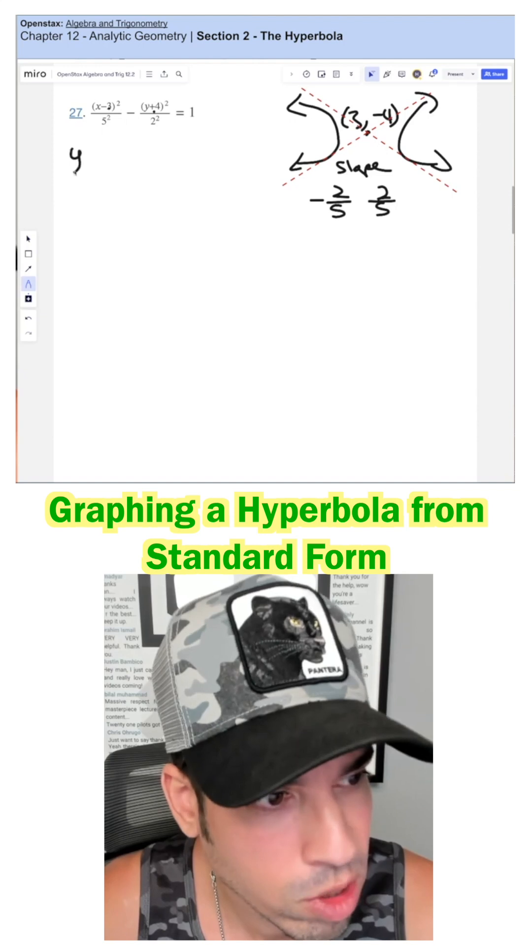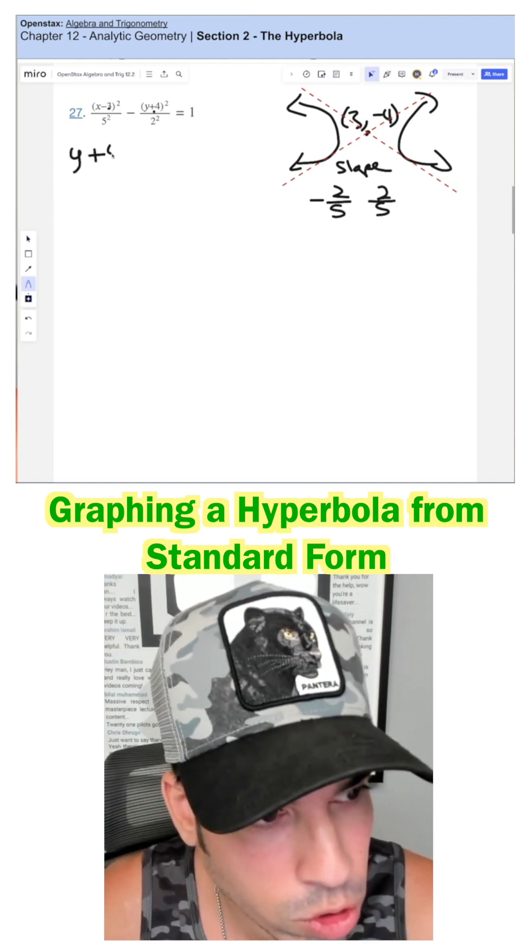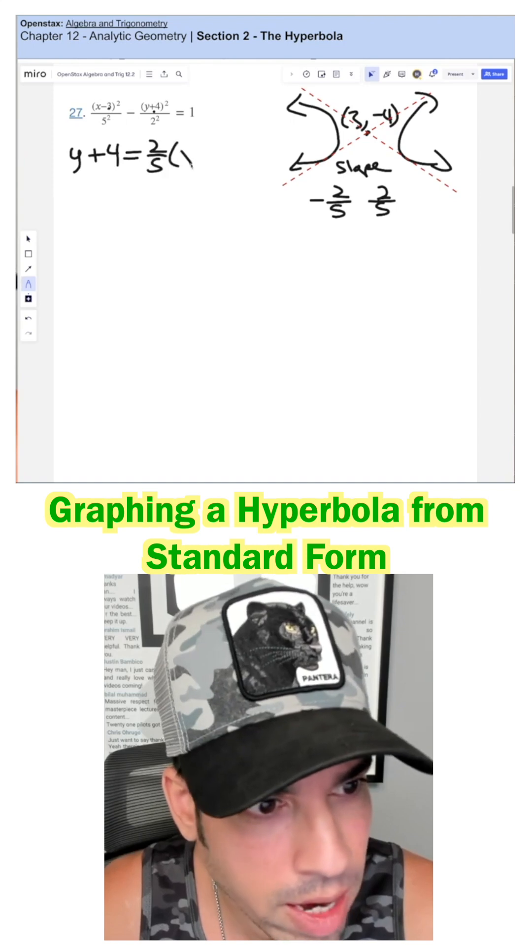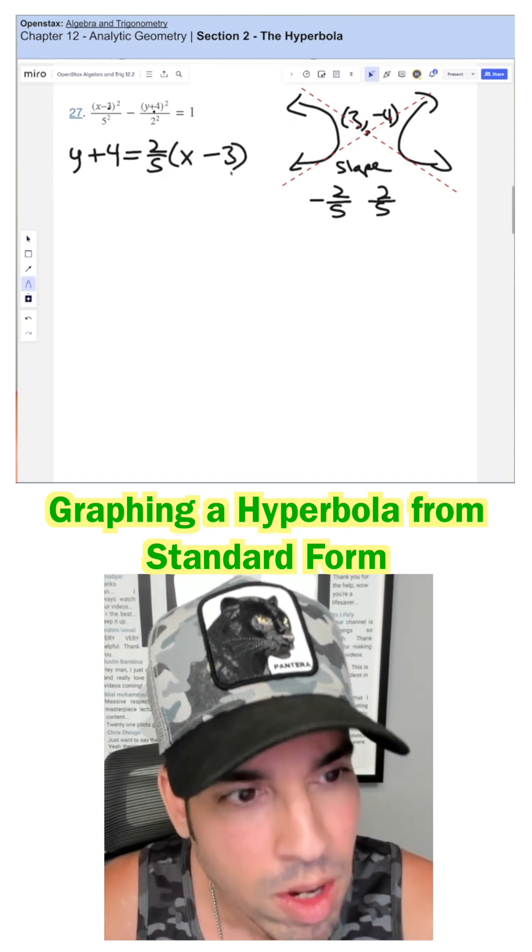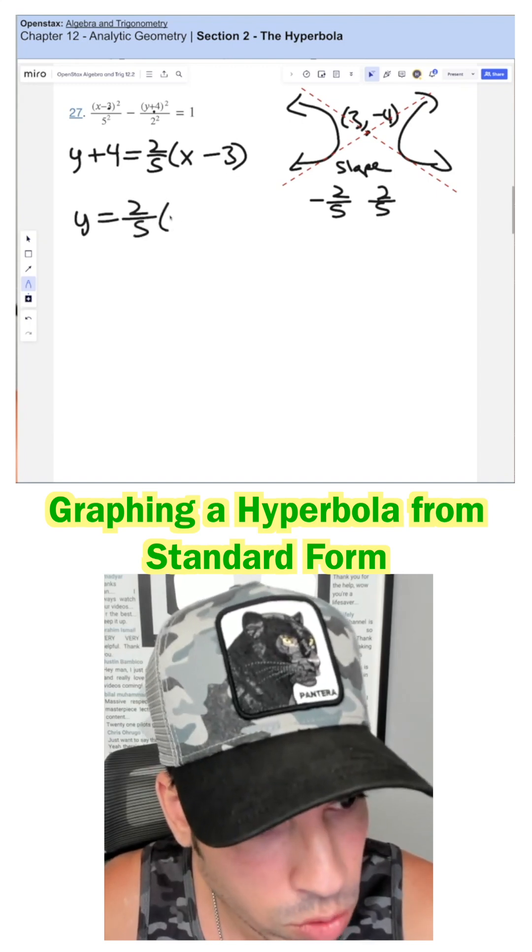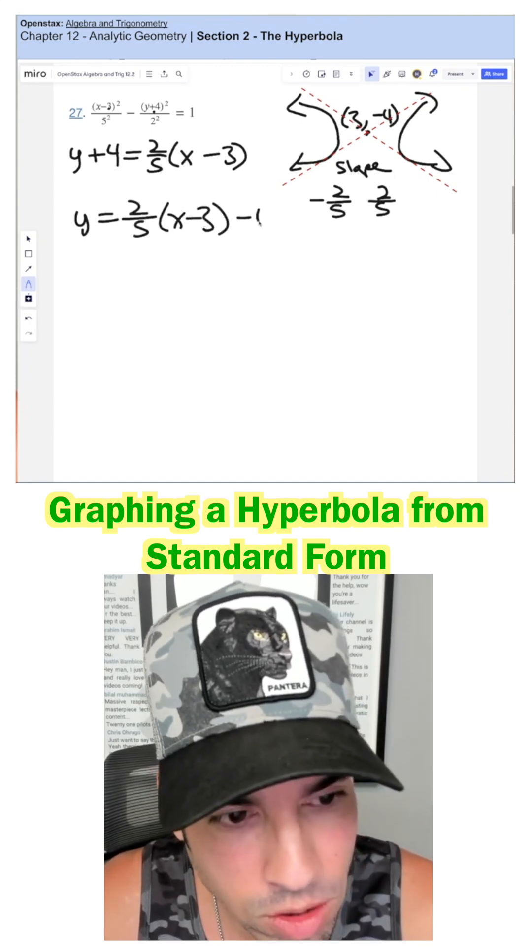So the first one using point-slope, y minus negative four, which is y plus four, is equal to two fifths times x and then minus that three. And then what they like to do in the back of the book is they just move that four over. So they make it y equals two fifths x minus three minus four.